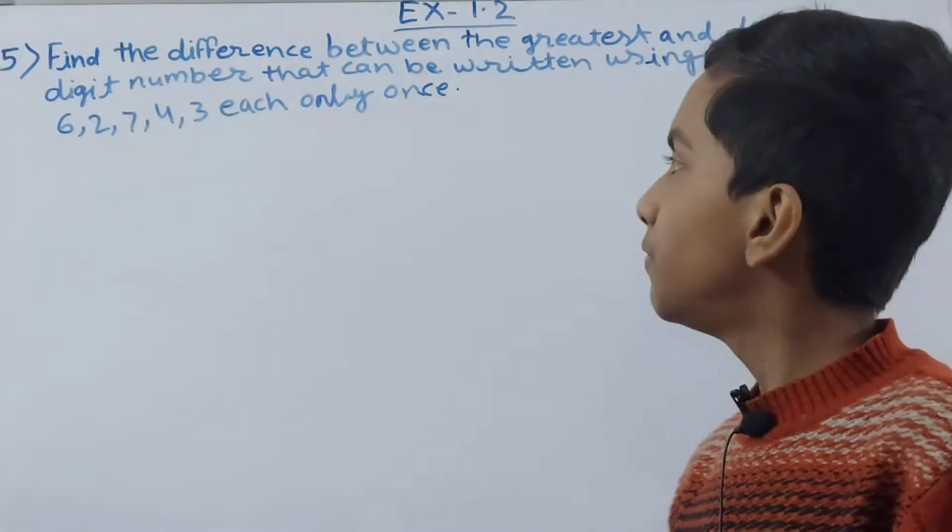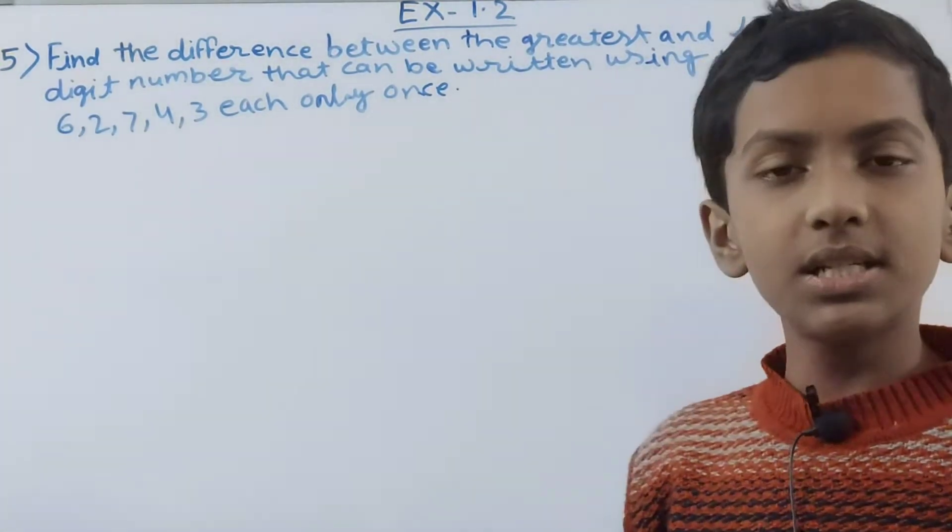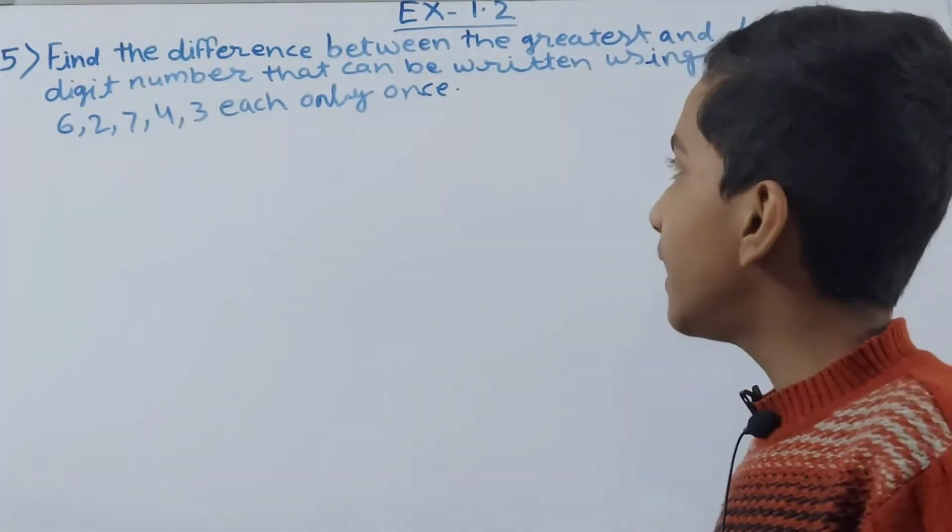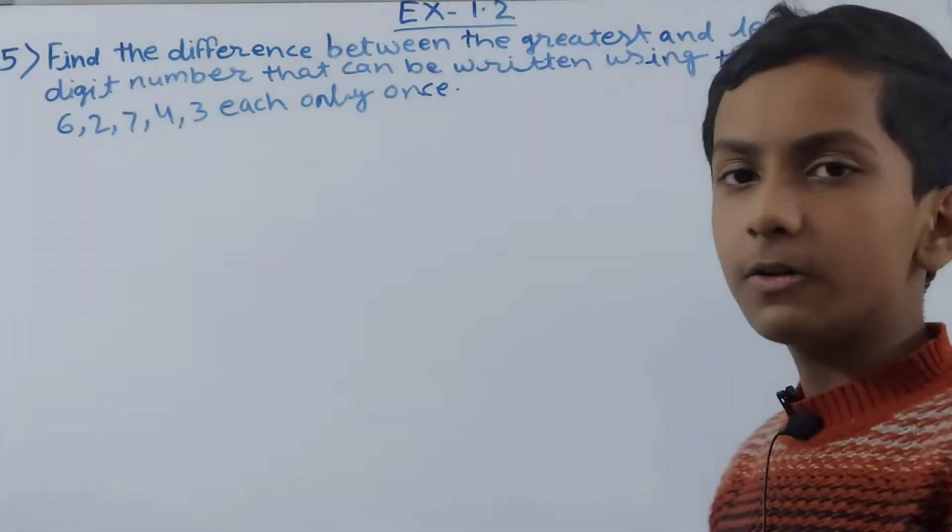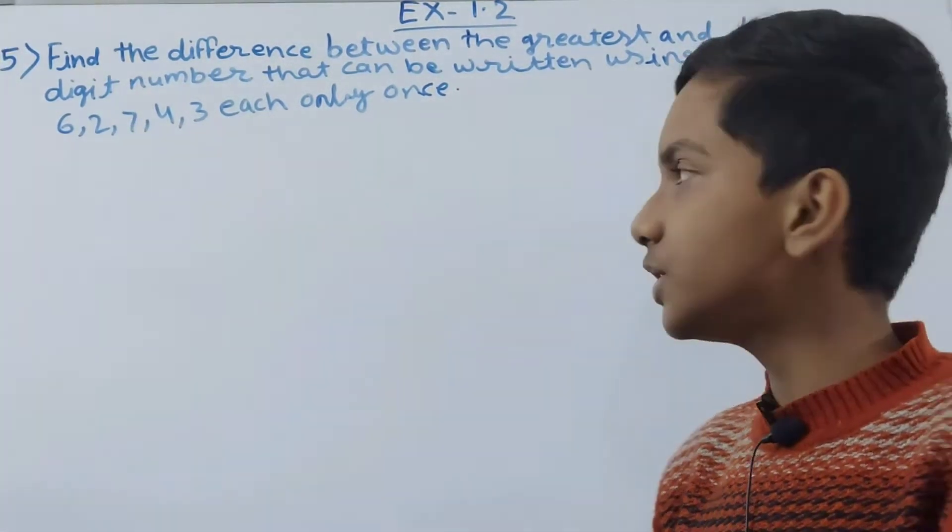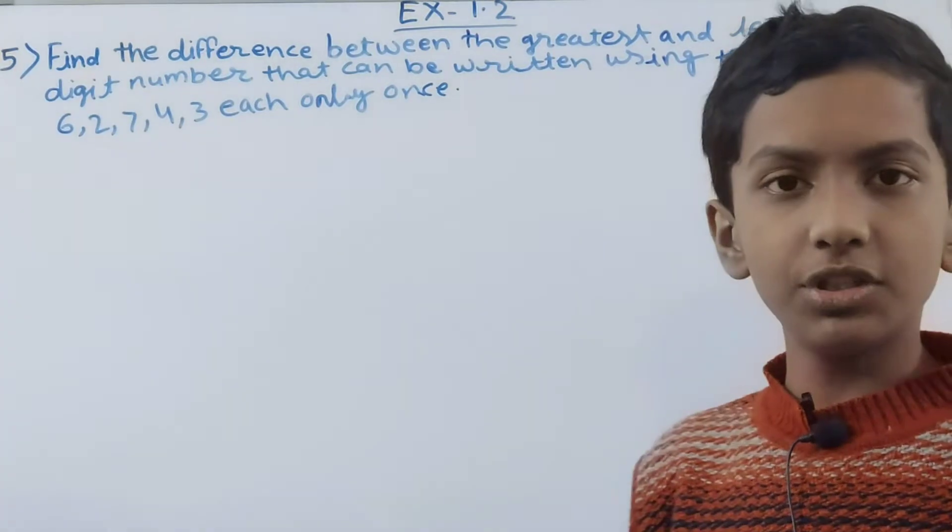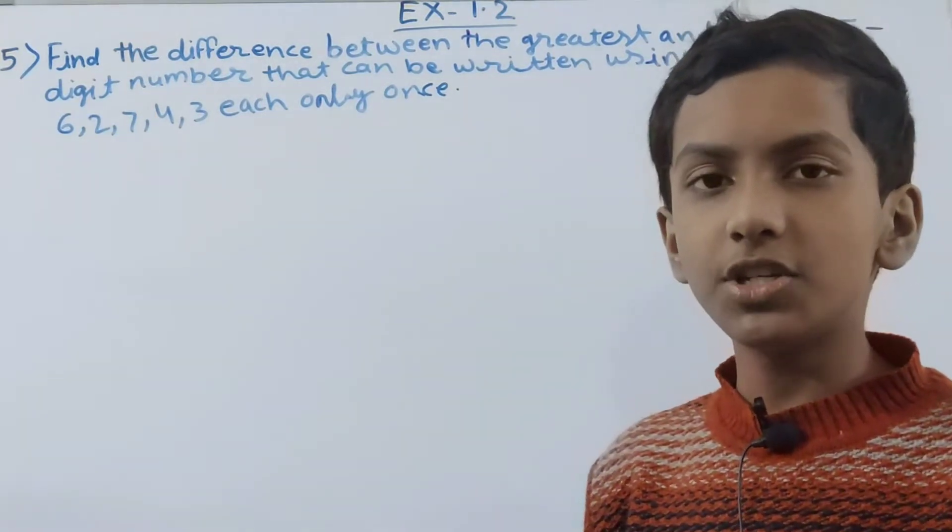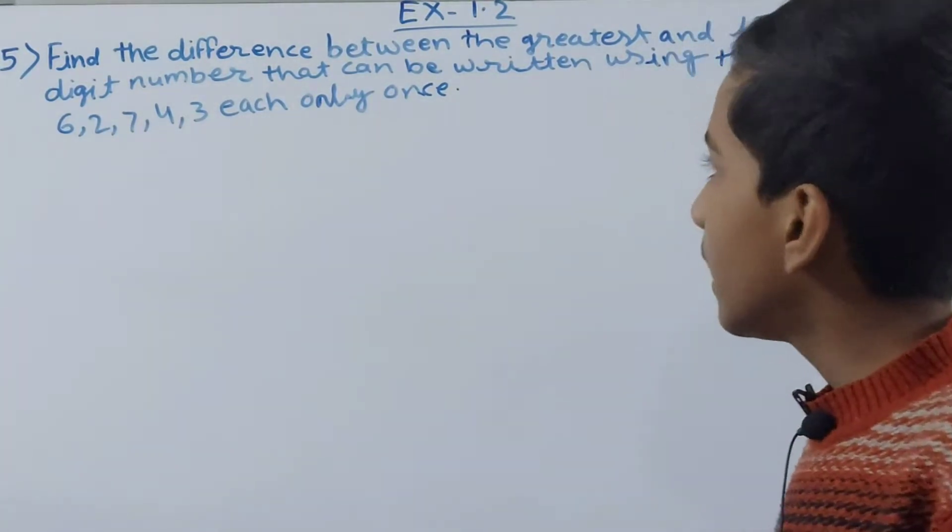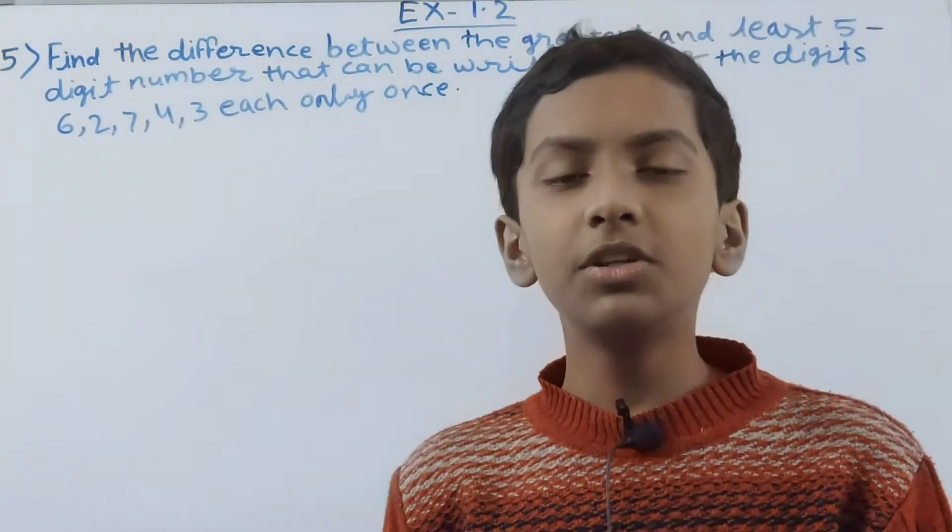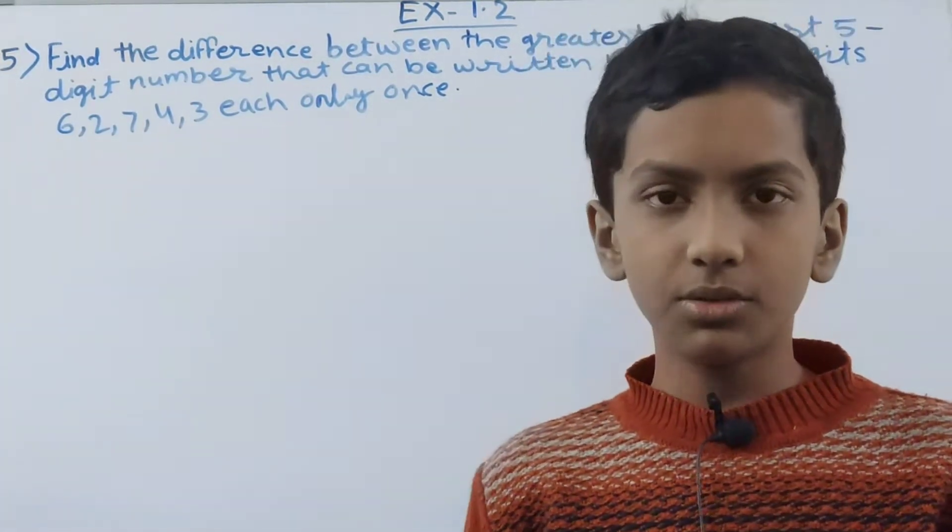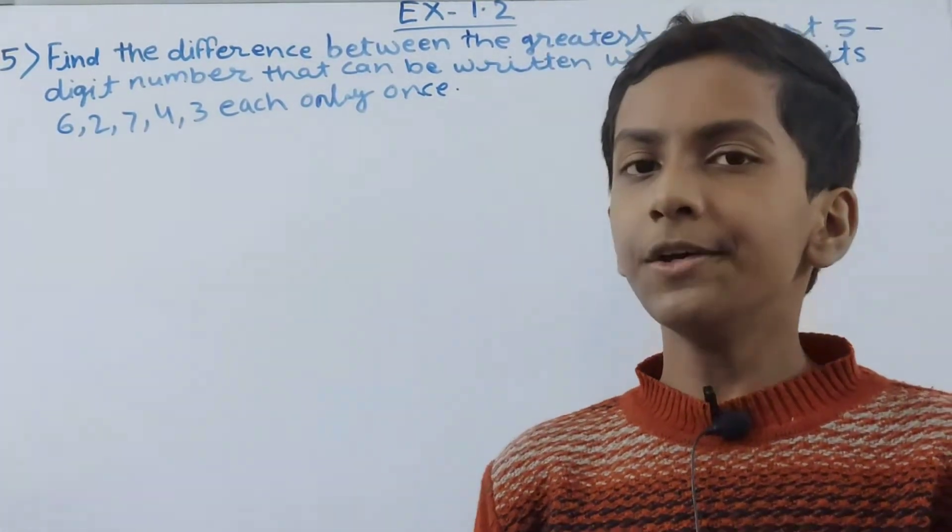Now what we have to do is we need to make the greatest number out of this and the smallest, or you can say the least, five digit number. After making them we need to find the difference.